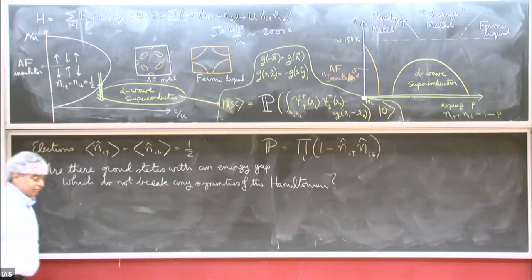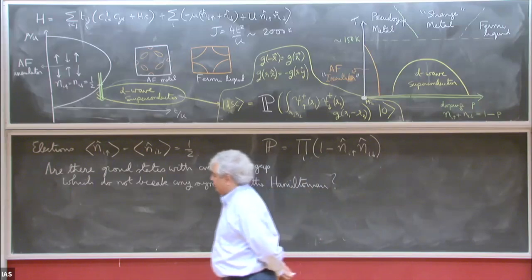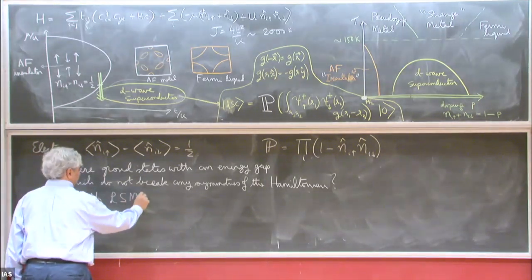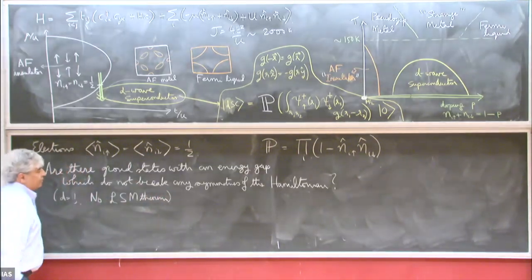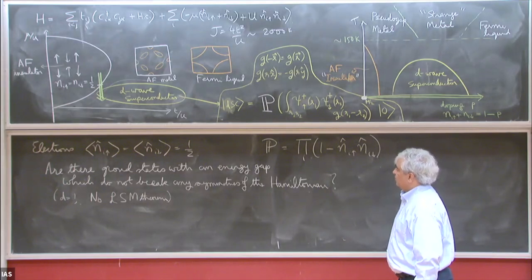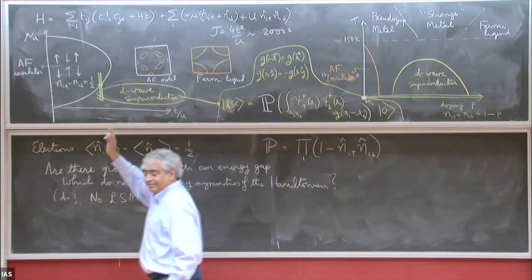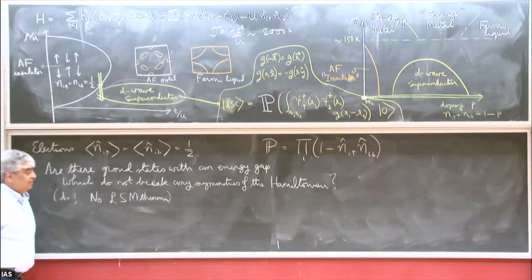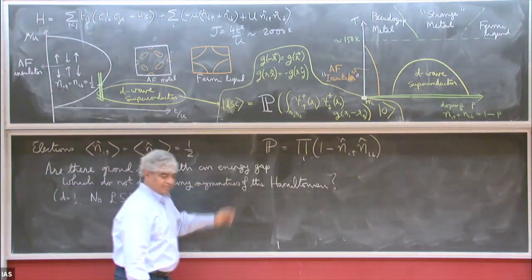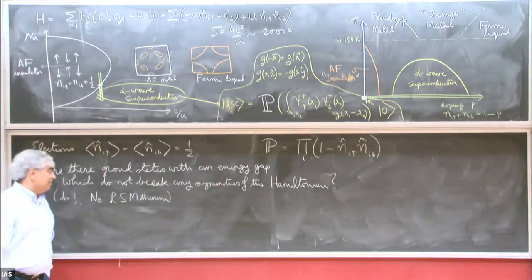Are there states with an energy gap that don't break any symmetries? In one dimension the answer is no — that's the Lieb-Schultz-Mattis theorem. In d equals one the answer is no, and that's the LSM theorem. The Hamiltonian conserves total number of electrons, so there's a U(1) charge symmetry, and you're not allowed to go superconducting because that would break that symmetry.